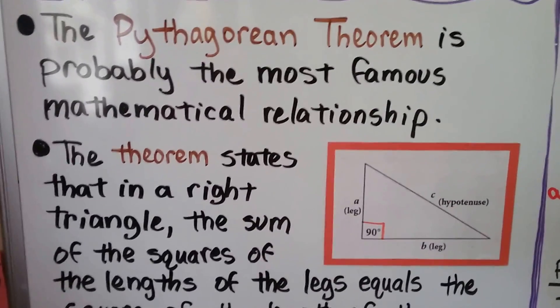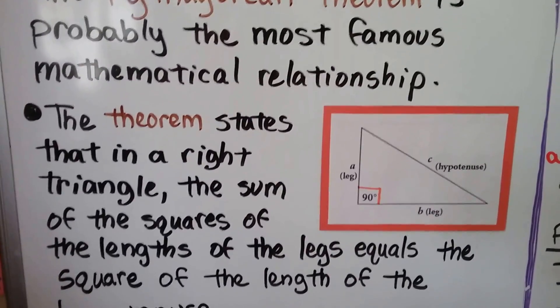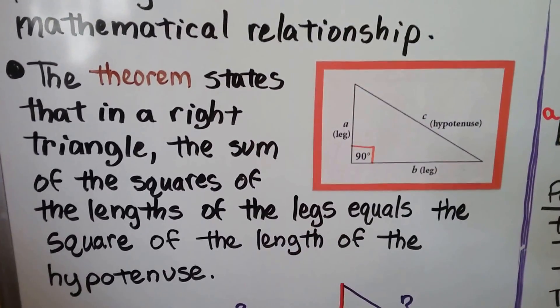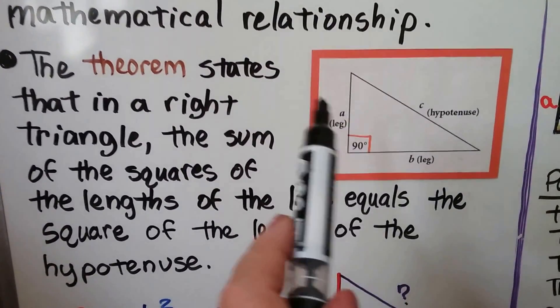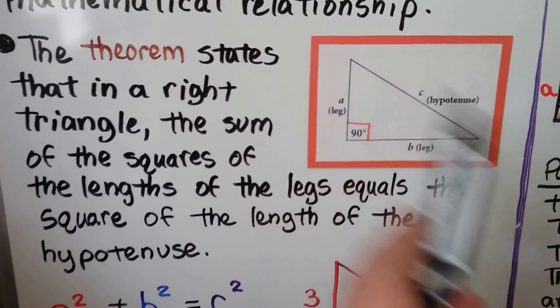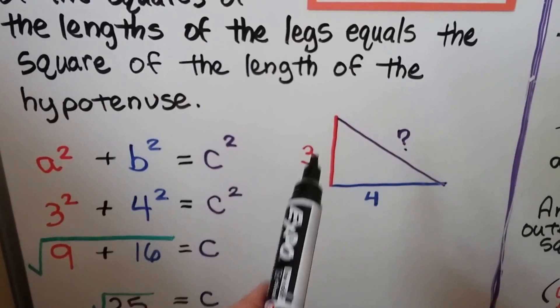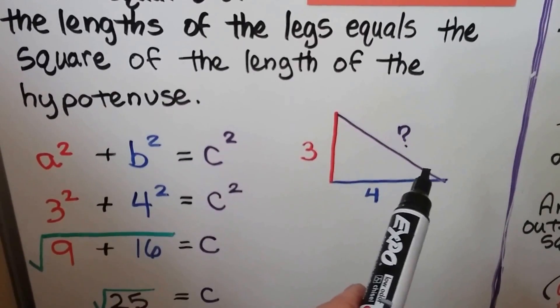The Pythagorean Theorem is probably the most famous mathematical relationship, and the theorem states that in a right triangle, the sum of the squares of the lengths of the legs equals the square of the length of the hypotenuse. Here we've got a length of 3 and a length of 4. We don't know what the hypotenuse is.